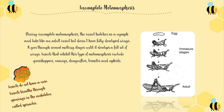Incomplete metamorphosis. During incomplete metamorphosis, the insect hatches as a nymph and looks like an adult insect but doesn't have fully developed wings. It goes through several moulting stages until it develops a full set of wings. Insects that exhibit this type of metamorphosis include grasshoppers, earwigs, dragonflies, termites, and aphids.